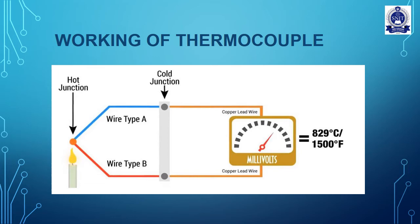When there is no temperature difference between the two junctions, there is no EMF flowing through the voltmeter. But when there is a difference in temperature at both junctions, the EMF induced at each junction will be different, and some current will flow through the voltmeter.